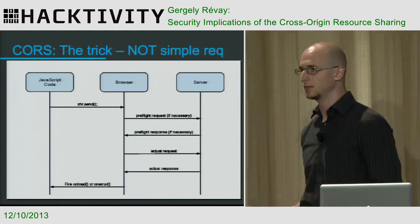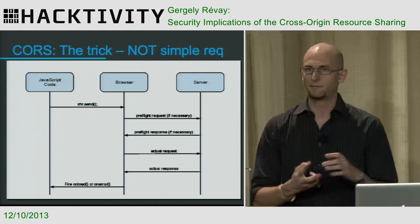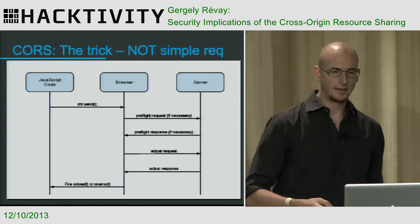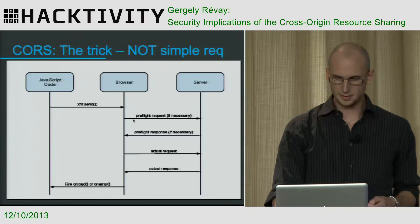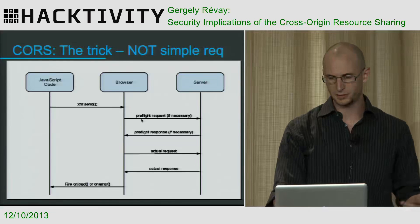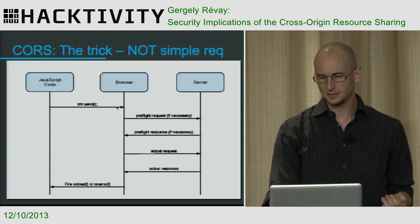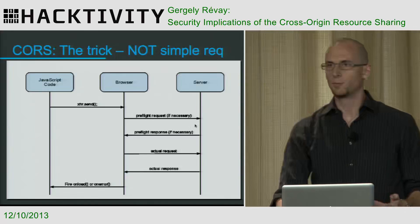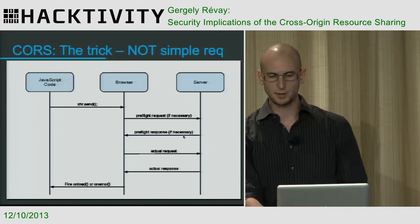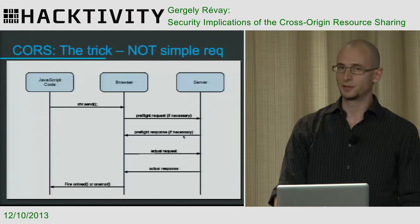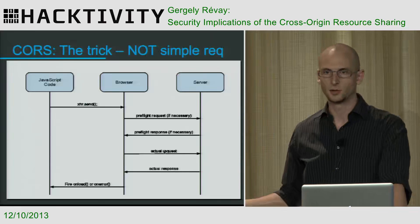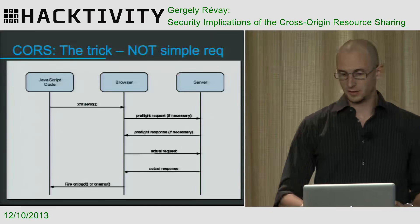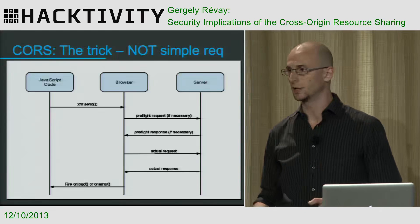But if your request is not simple — for example, it's a PUT, or it has a non-standard HTTP header or content type — then the browser sends a preflight request. A preflight request asks the server whether this kind of request is allowed. The server responds with a preflight response telling the browser whether the request is allowed. If allowed, the original request is sent. If not allowed, the browser drops your request and it will not be sent.